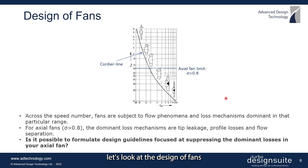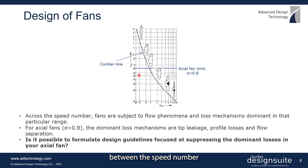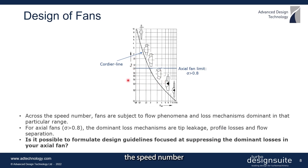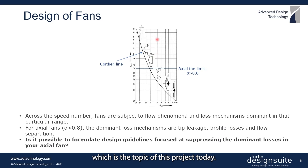Now let's look at the design of fans in a bit more detail. This chart provides the relationship between speed number and diameter number as experimentally found by Cordier. This relationship, called the Cordier line in the literature, represents optimum fans with high efficiency. There is a relationship between speed number or diameter number and the type of fan to be used — axial, diagonal, or radial — in order to obtain high efficiencies. Across the speed number range, fans are subject to various flow phenomena and loss mechanisms, with tip leakage, profile losses, and flow separation being dominant for axial fans.